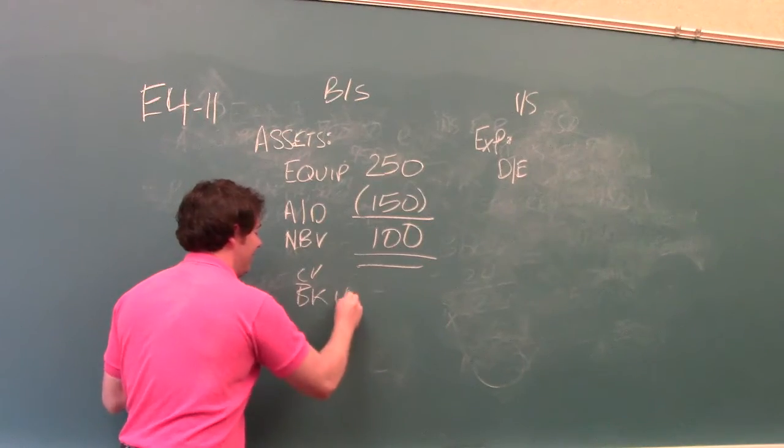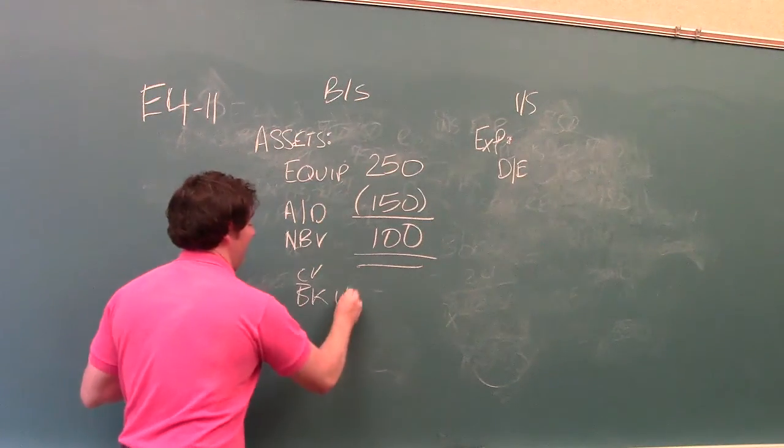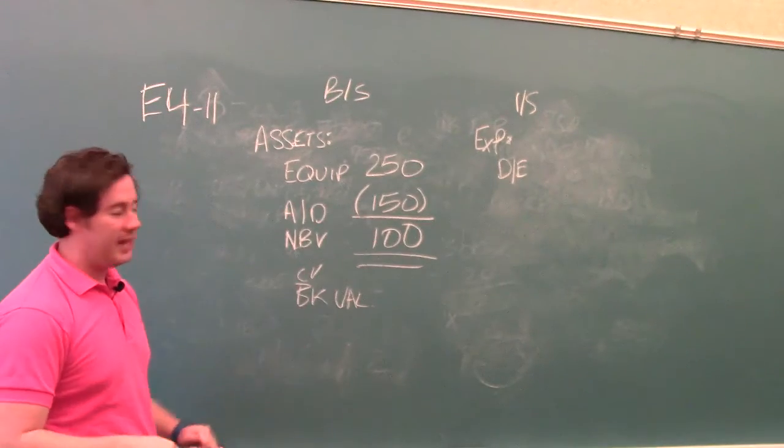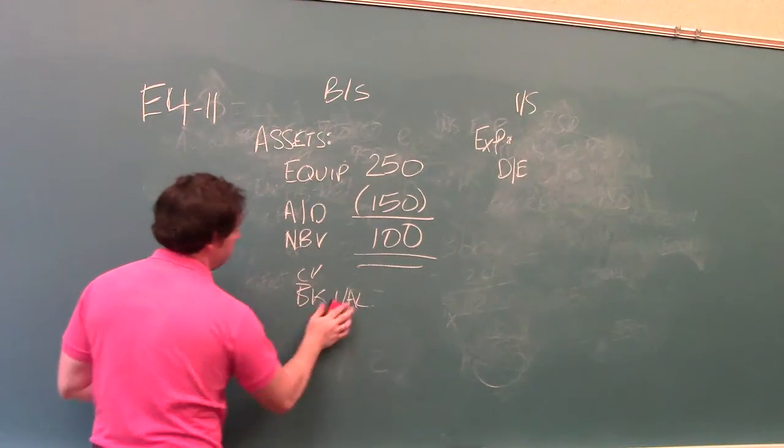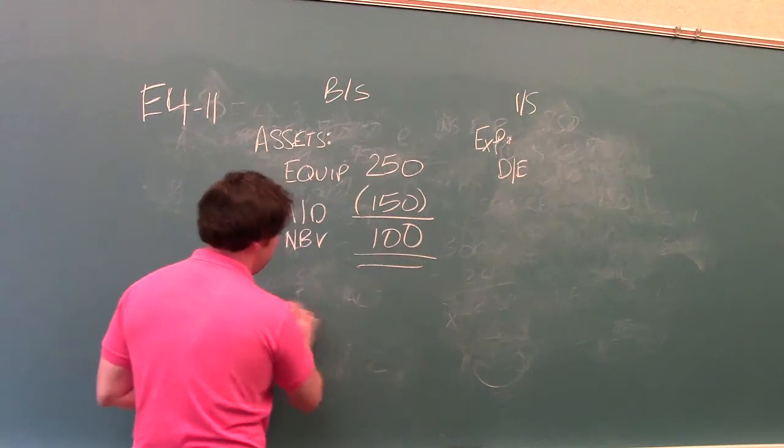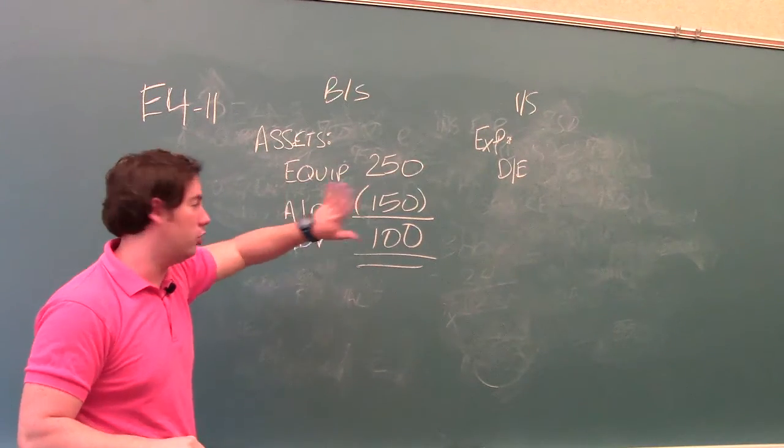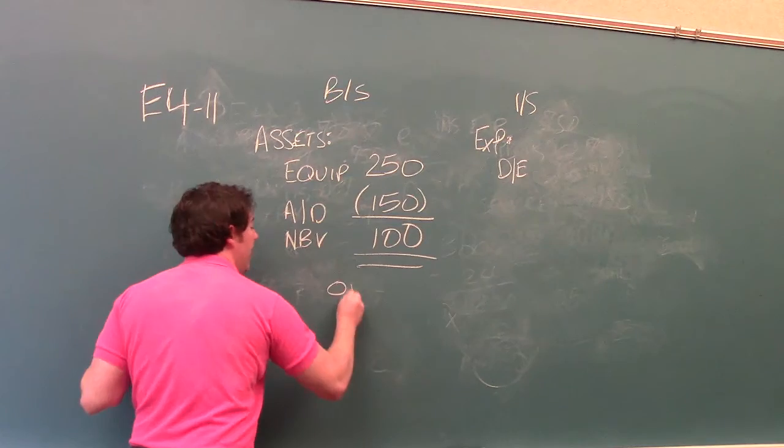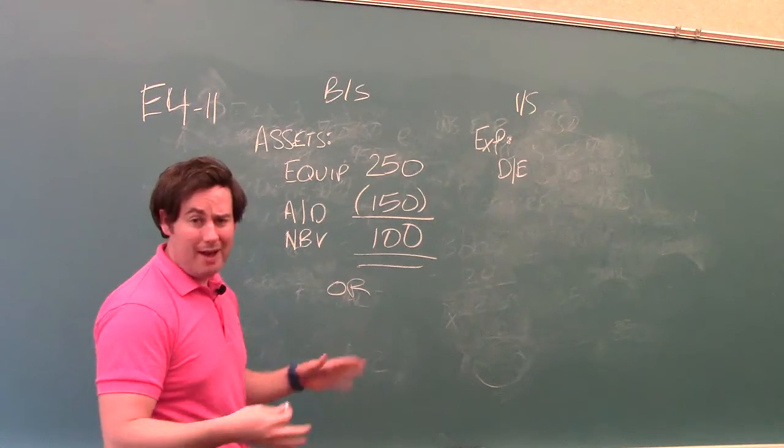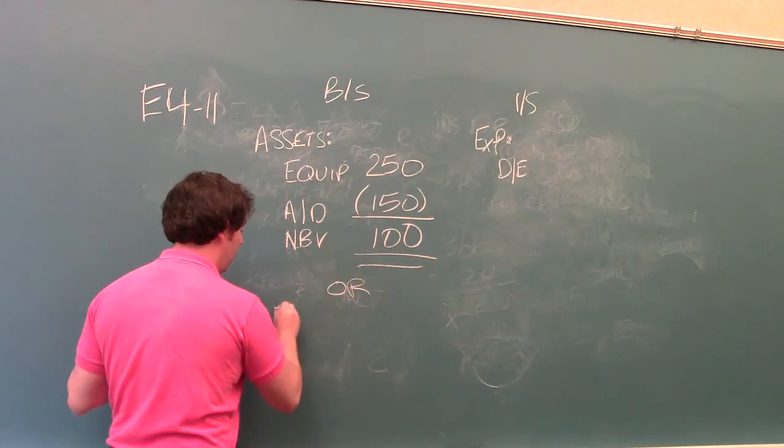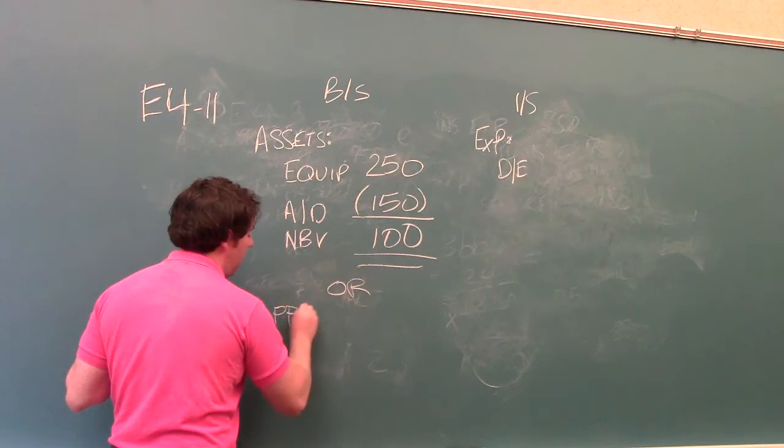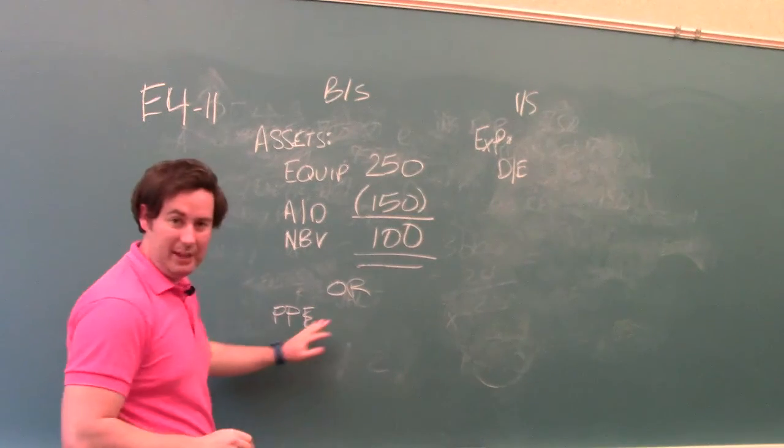Usually abbreviate this, book value. So all of these mean the same thing, they're just different terminologies. The reason why I show you this here, this net book value, is because this is how it would look on a financial statement. It would either look like this, or it would say something like whatever the asset is, if it's equipment or whatever. Usually we group it into property, plant, and equipment, which is abbreviated PPE.